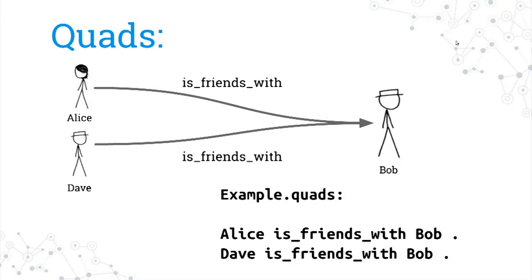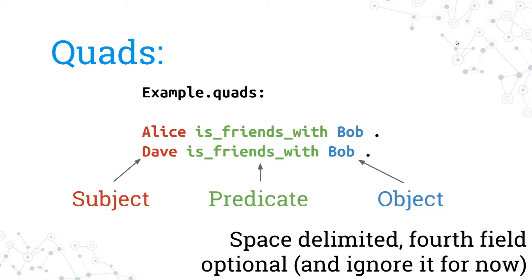The quad file — this is actually the data format you could pass it — is just these two lines: Alice is friends with Bob, Dave is friends with Bob. There's a subject (Alice), some predicate, which is the connection node between these two things, and Bob is our target object. There's a fourth field that's optional and hidden — advanced topics I probably don't have enough time for. These are positions in the triple or the quad.